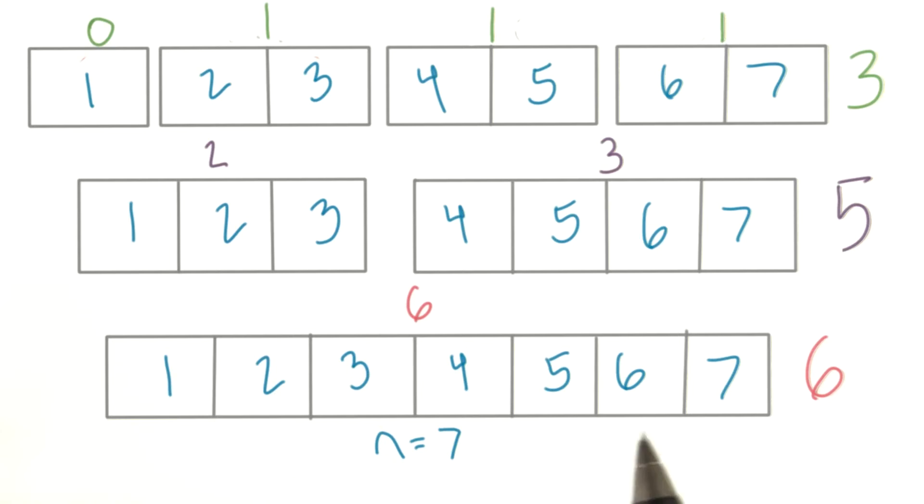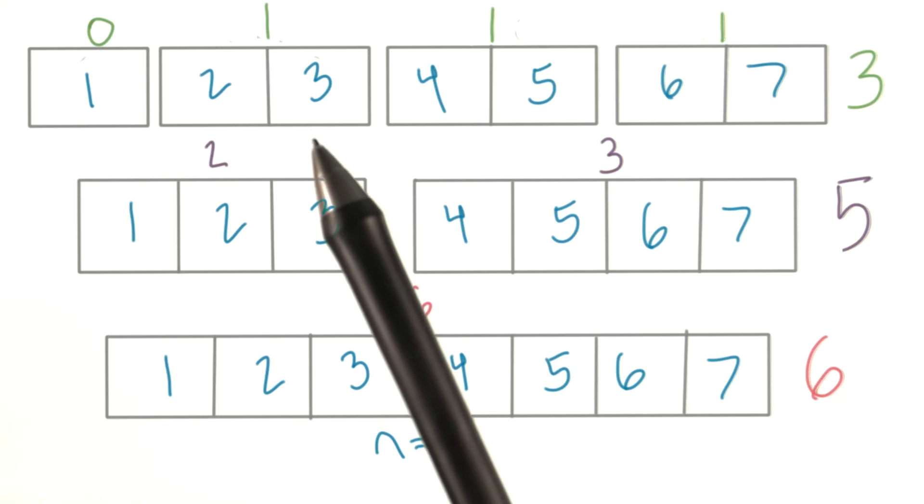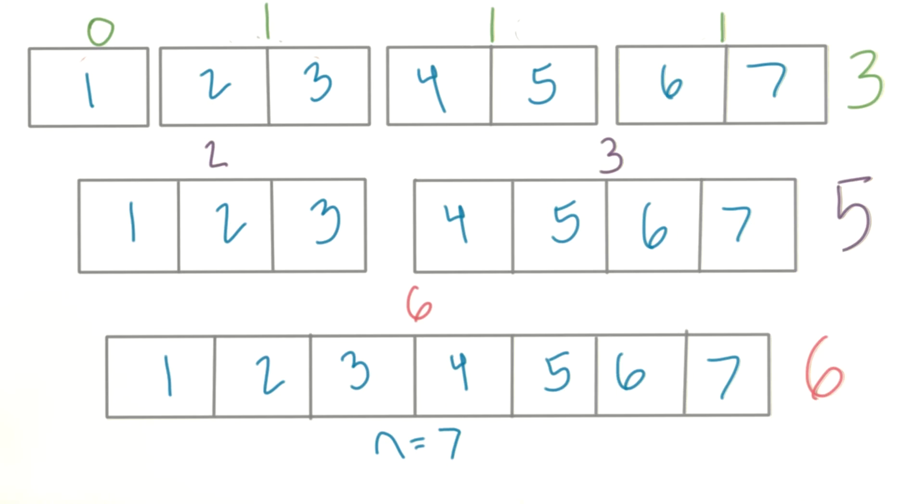So again, here we have an array of seven. Here we have an array of four and an array of three, which adds up to seven. And here, one, two, two, and two adds up to seven.